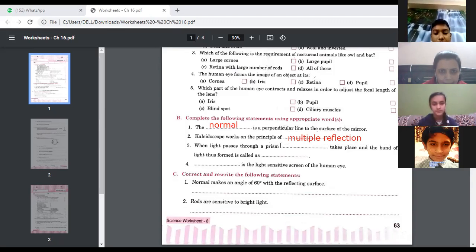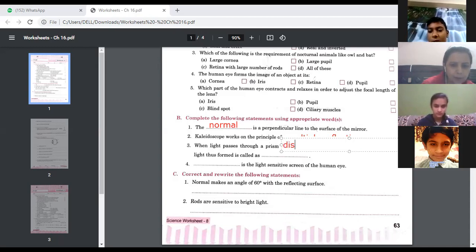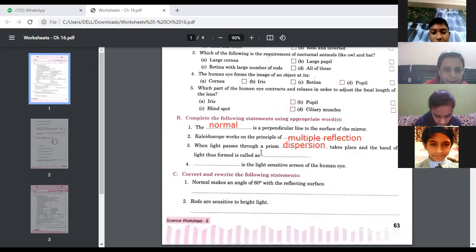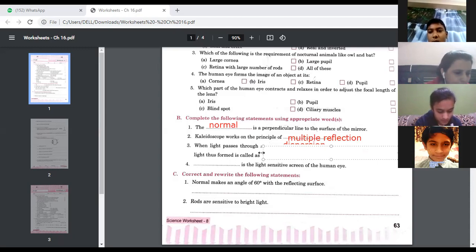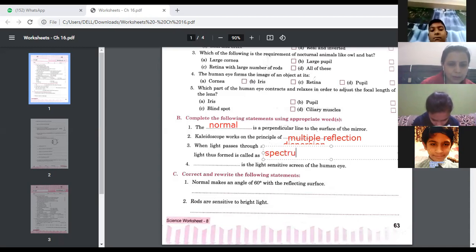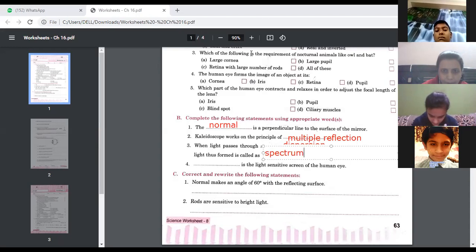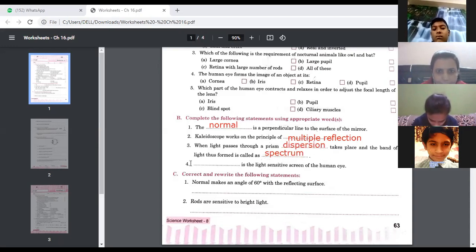Next is when light passes through a prism, blank takes place and the band of light thus formed is known as what? When the light passes through the prism what happens? Yes Sarthak Singh. Dispersion, very good, dispersion of light takes place and light thus formed is called as spectrum. The band of seven colors is known as spectrum.